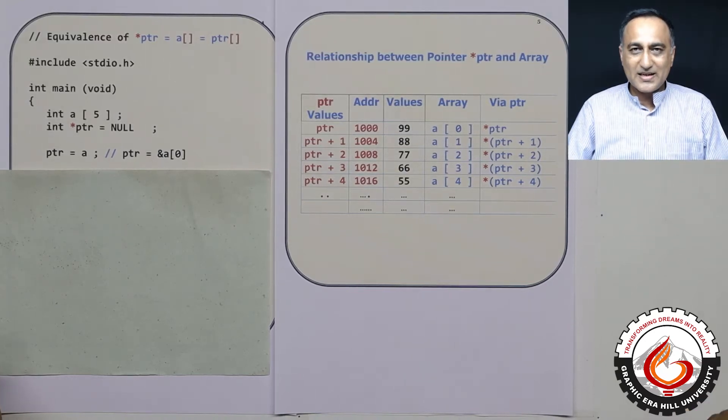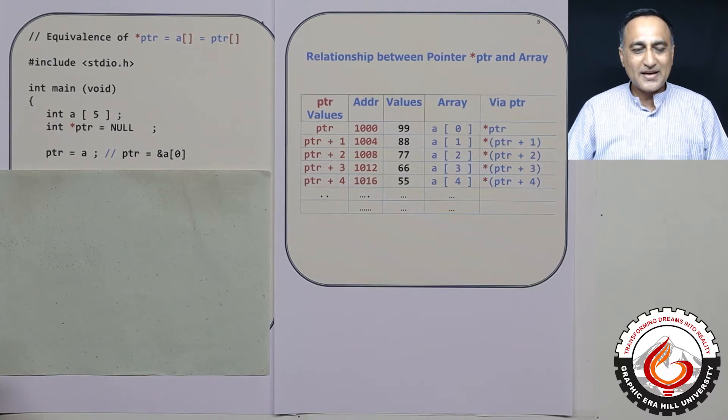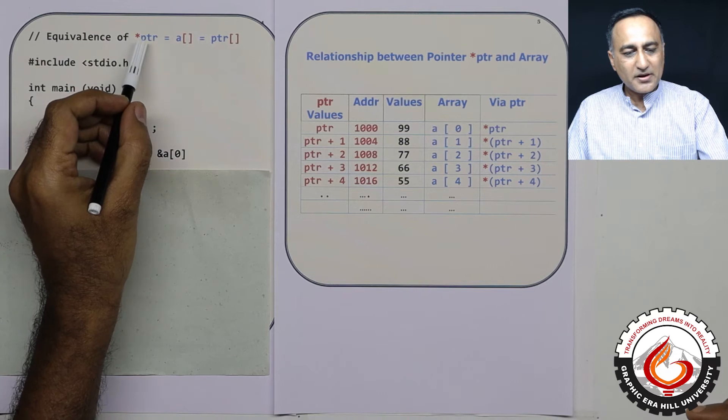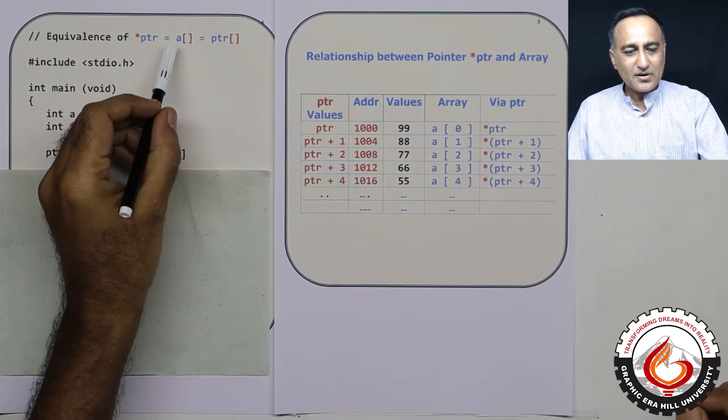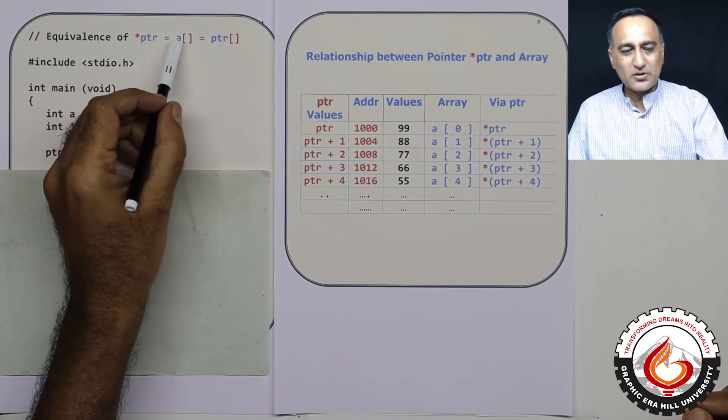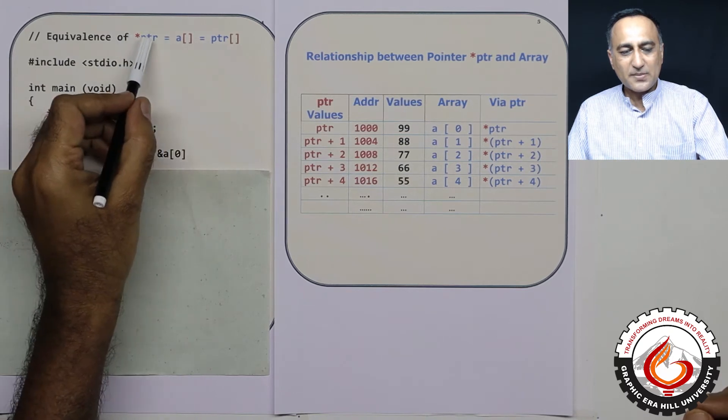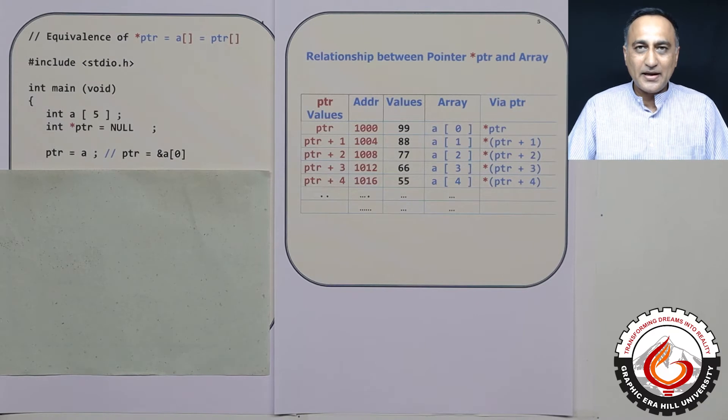In session two of understanding the very close relationship between pointers and arrays, I am going to show you that a pointer to an array, assuming a is this array, are both the same. And this *ptr is also equal to ptr of square bracket, or the array operator.